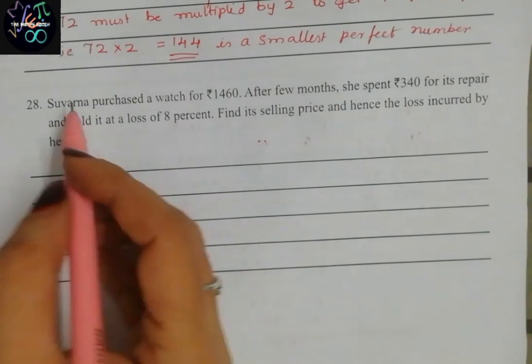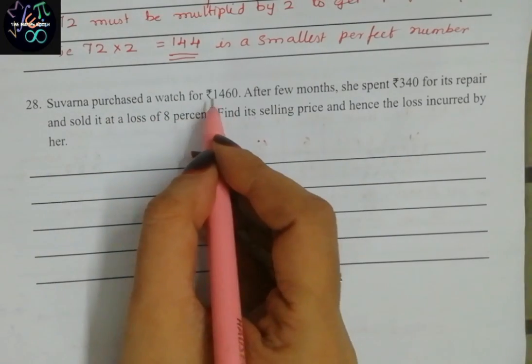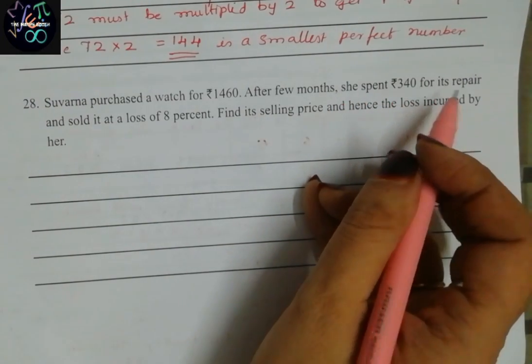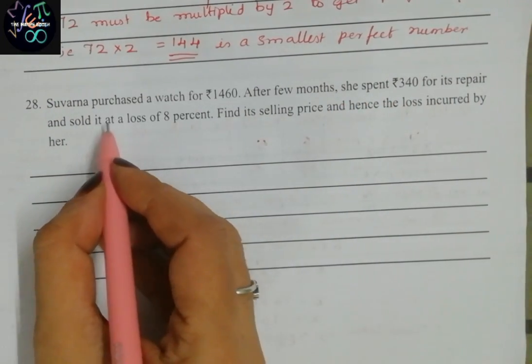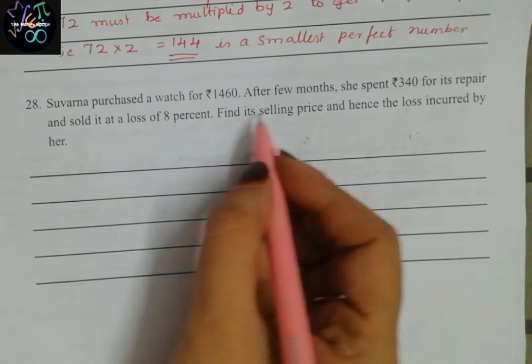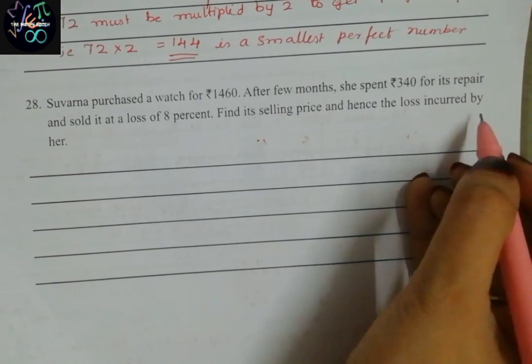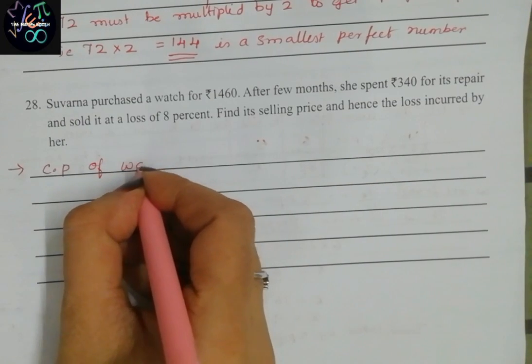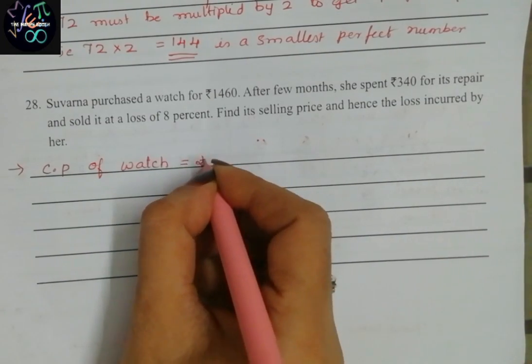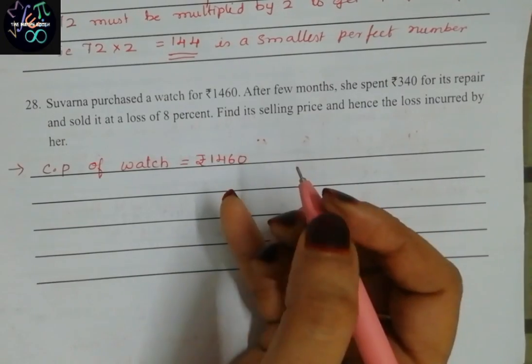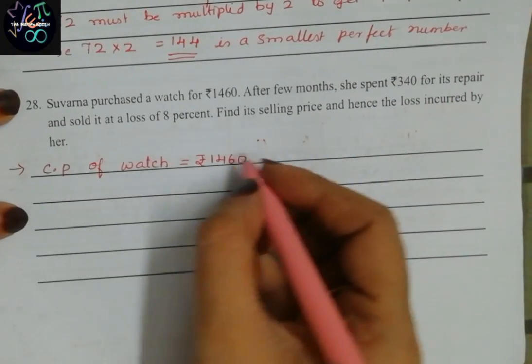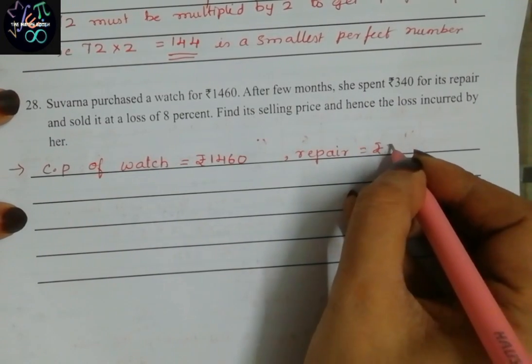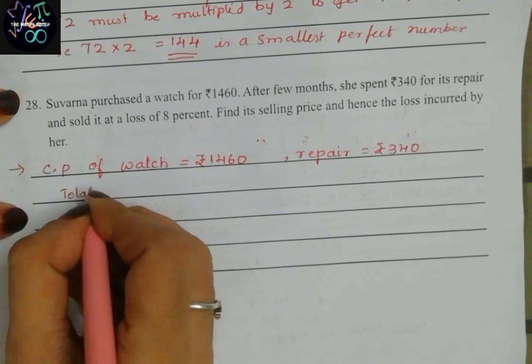Question number 28: Savarna purchased a watch for rupees 1,460. After few months, she spent rupees 340 for its repair and sold it at a loss of 8 percent. Find its selling price and hence the loss incurred by her. First, cost price of watch is rupees 1,460, and she spent for repairs rupees 340. That means total cost price is rupees 1,460 plus 340. If we add this, we get rupees 1,800.